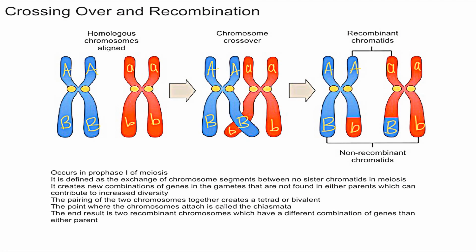In this video I'm going to explain what crossing over is. Crossing over is something that occurs in prophase one of meiosis — meiosis is when you're trying to generate gametes for sexual reproduction. Crossing over does not occur during mitosis, so that's an important distinction. Crossing over is defined as the exchange of chromosome segments between non-sister chromatids. As you can see here, this chromatid and this chromatid are sister chromatids, and this chromatid and this chromatid are also sister chromatids.